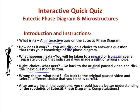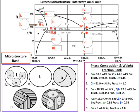So, let's get started. Here's the first question. For the given conditions — 210 degrees Celsius and 8% Sn — at Roman numeral 1, and this red dot right here, what is the phase composition and weight fraction? Your answer would go in this box right here if we were doing it by hand. Your choices are 1, 2, 3, 4, and 5.